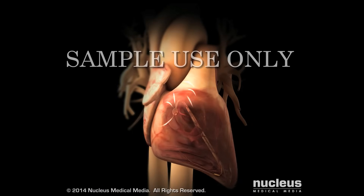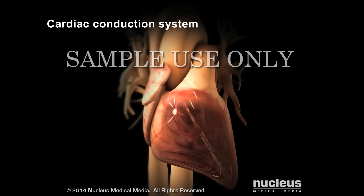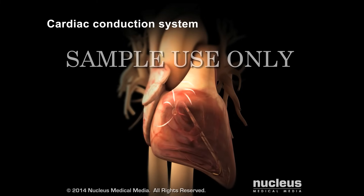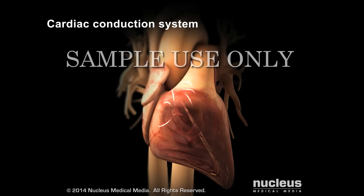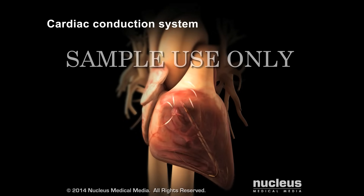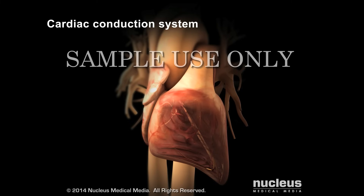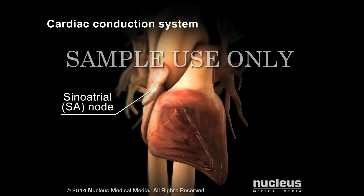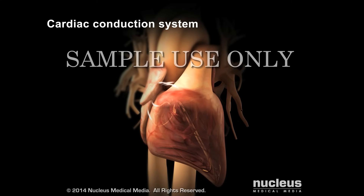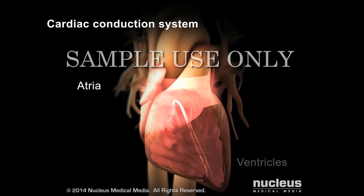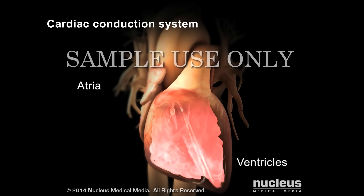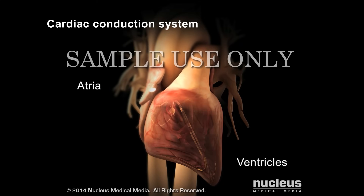A group of cells in the heart, called the cardiac conduction system, uses electrical impulses to control the speed and rhythm of each heartbeat. Each heartbeat starts in the right atrium in the sinoatrial, or SA, node, then spreads through the walls of the heart chambers, called the atria and ventricles, causing them to contract. This process repeats with each heartbeat.